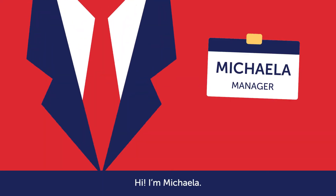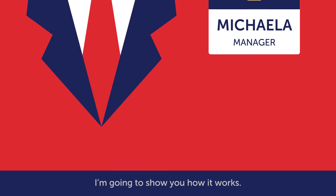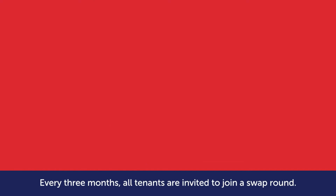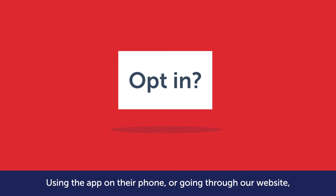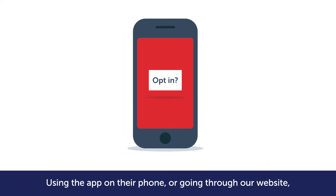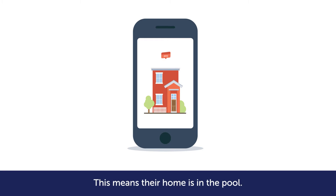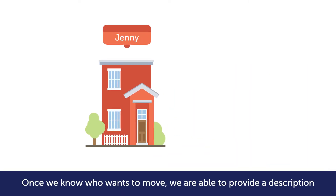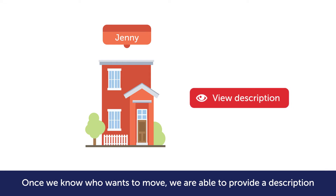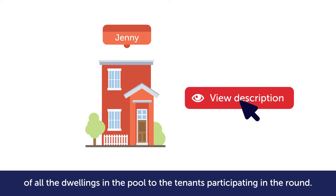Hi, I'm Michaela. I'm the manager of our new social housing home exchange program. I'm going to show you how it works. Every three months all tenants are invited to join a swap round. Using the app on their phone or going through our website, those wanting to swap opt in. This means their home is in the pool. Once we know who wants to move, we are able to provide a description of all the dwellings in the pool to the tenants participating in the round.